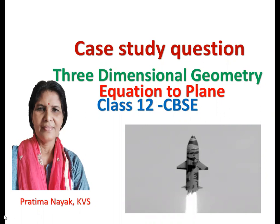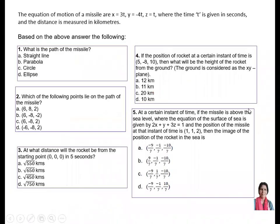As I told earlier, if you read the question very mindfully — the question is on your screen, let us read it. The equation of motion of a missile: x is equal to 3 times of t, y is equal to minus 4 times of t, z is equal to t. t is given in seconds and distance measured in kilometers. Based on the above, you have to answer the following.